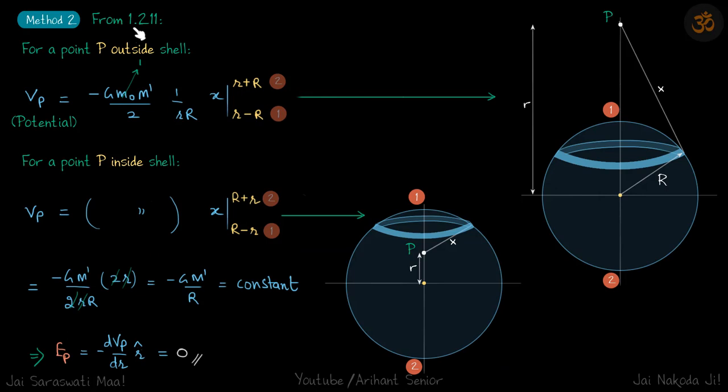For that we are going to use this equation which we derived in problem 1.211. There, what we saw is if we have a point P outside the shell, then the potential due to the shell at that point P was given by this term.